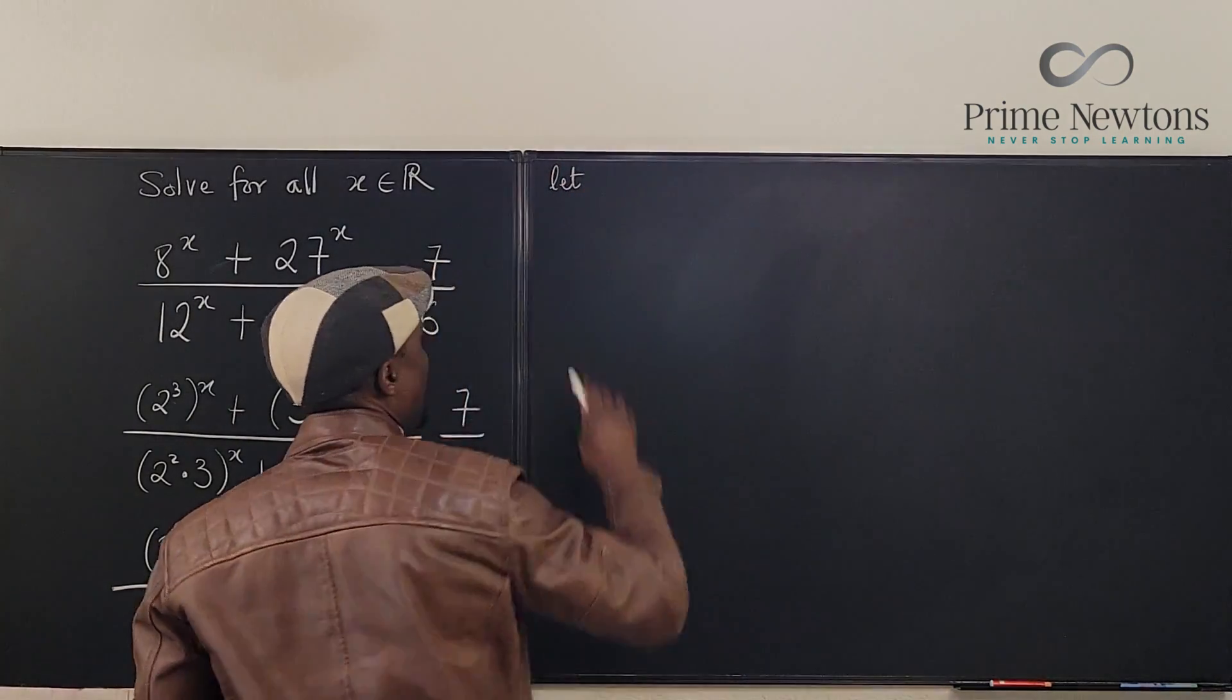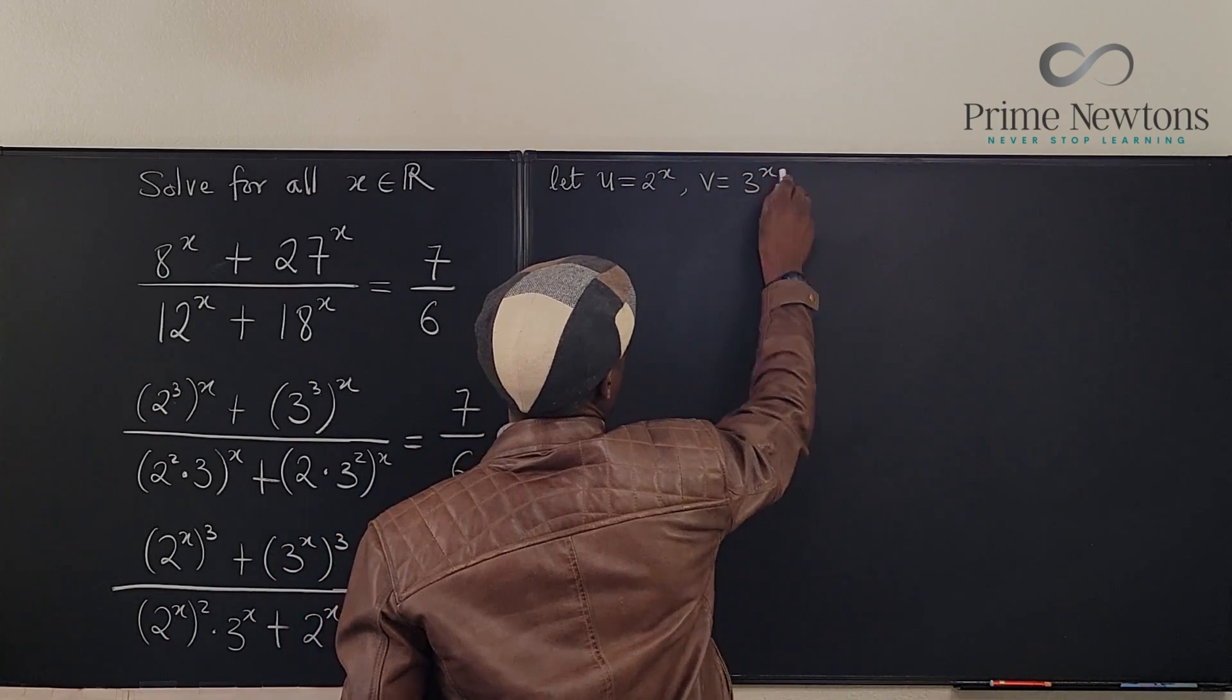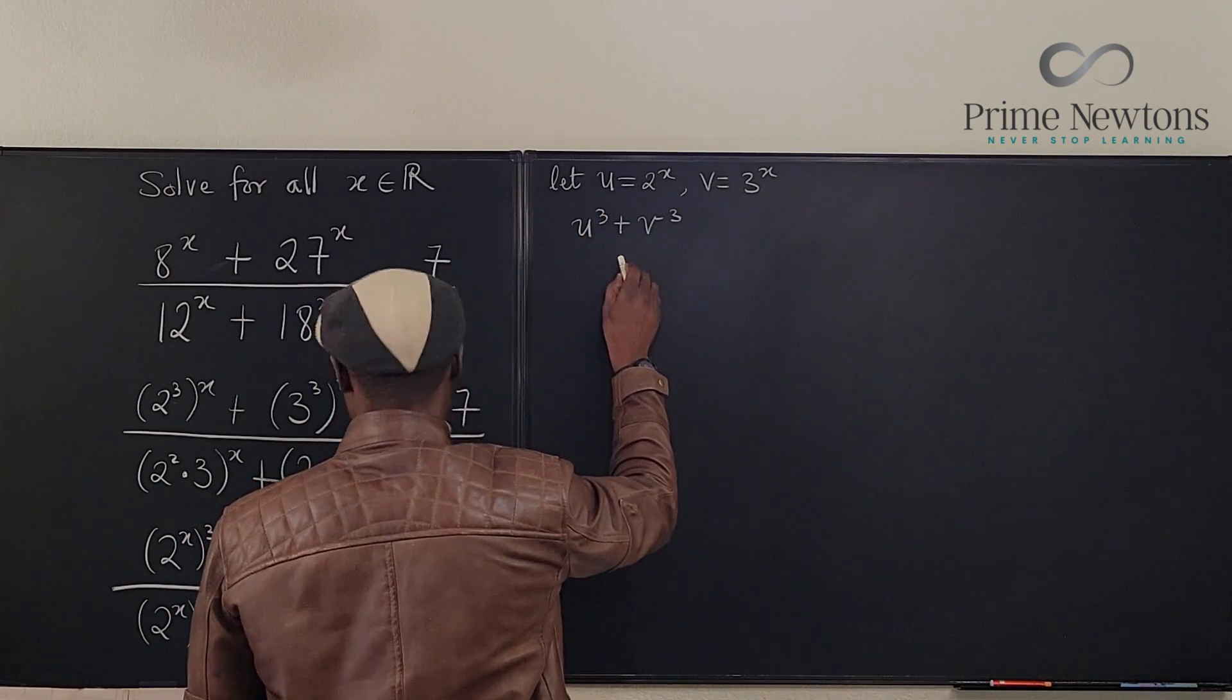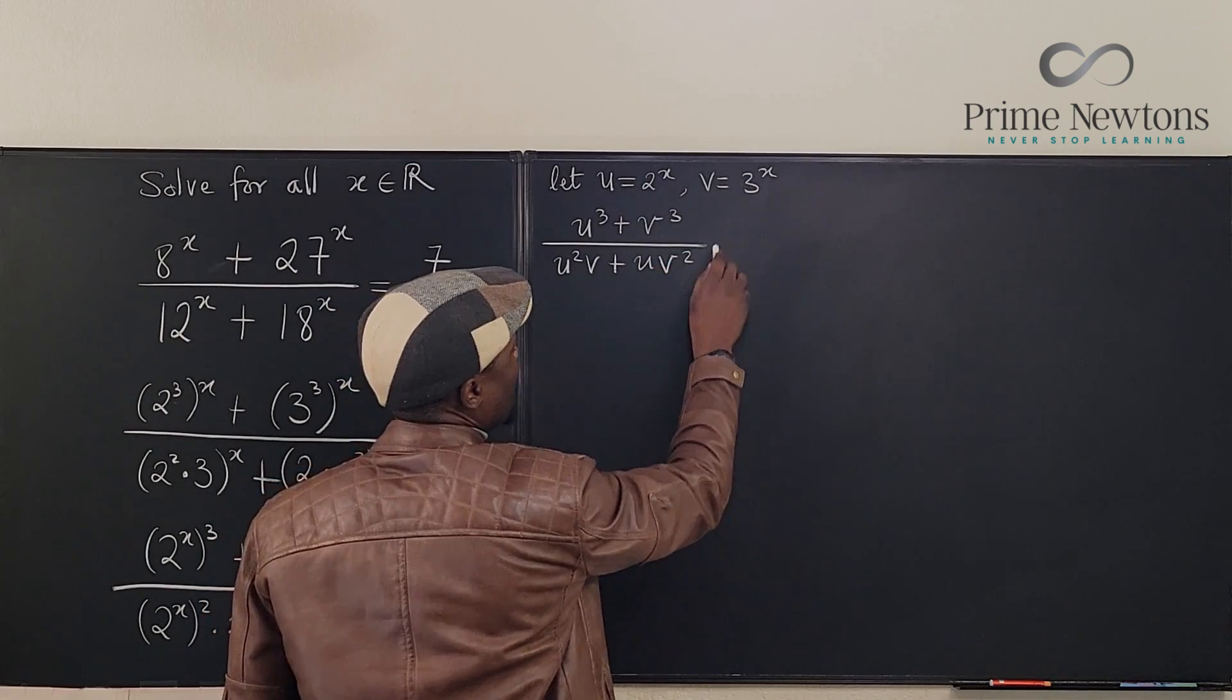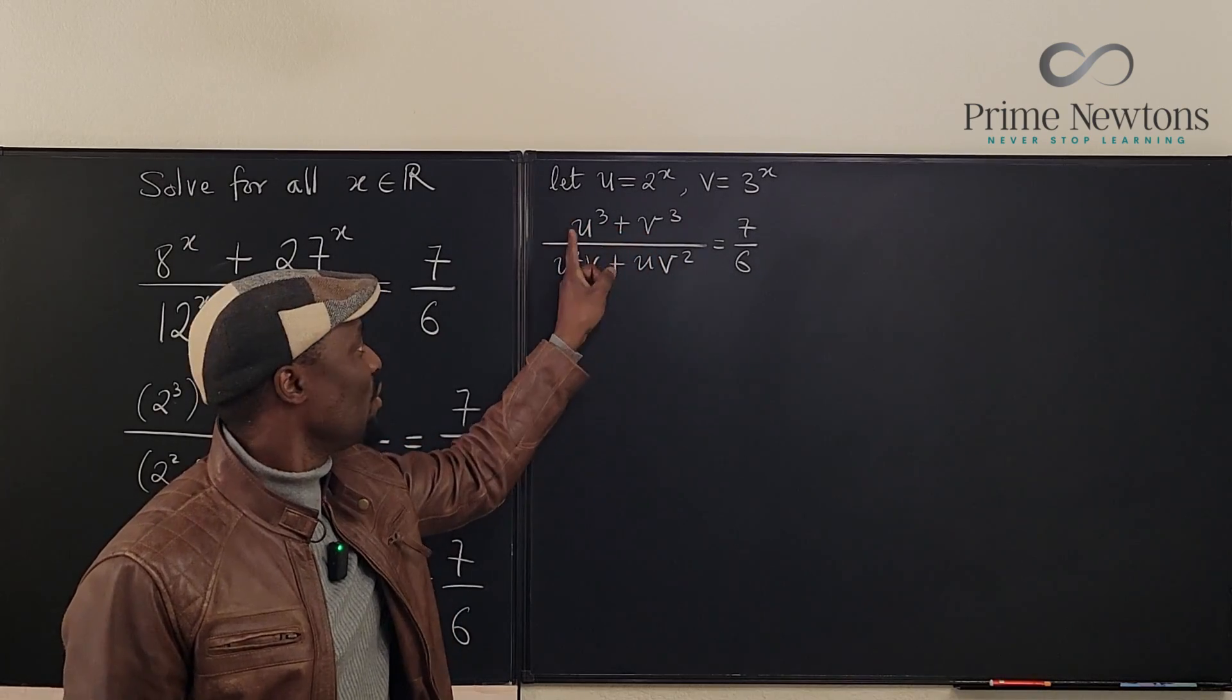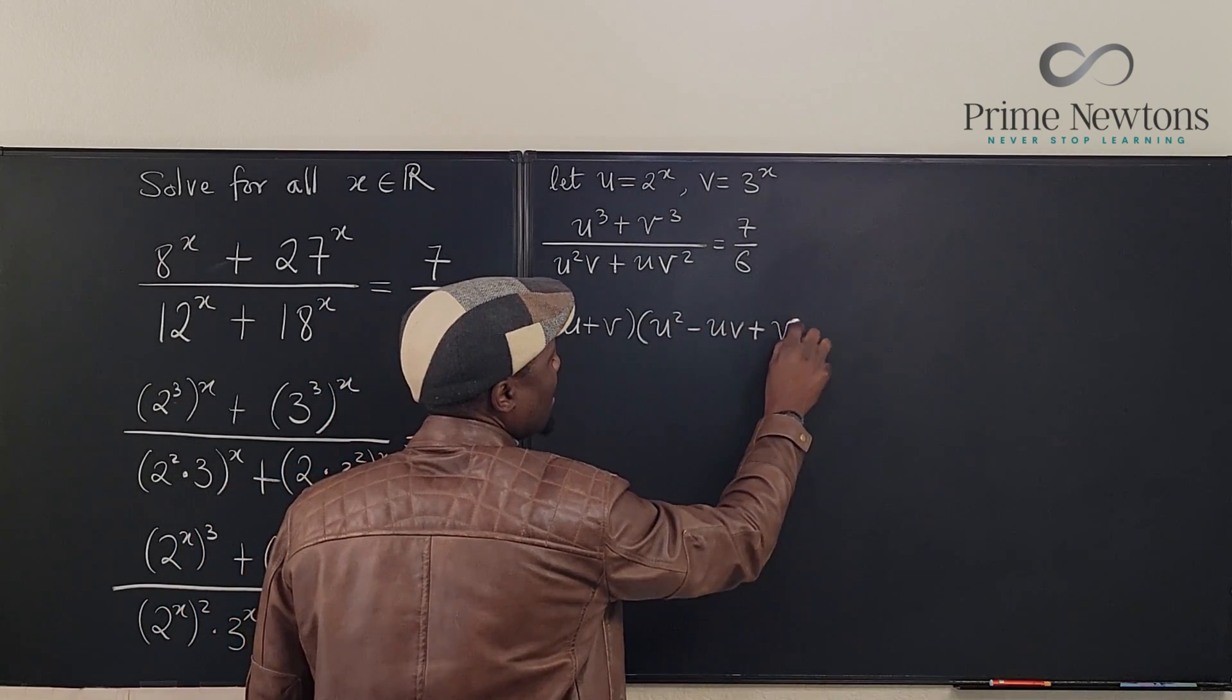So we're going to say let u be equal to 2 to the x and let v be equal to 3 to the x. So I'm going to rewrite the whole of this. I'm going to have u cubed plus v cubed over u squared times v plus u times v squared equals 7 over 6. I can clearly see something already. This is the sum of two cubes. We can have a factor that is u plus v.